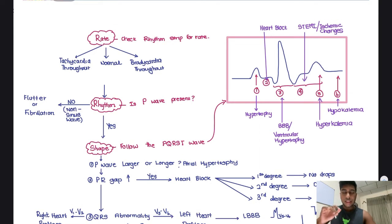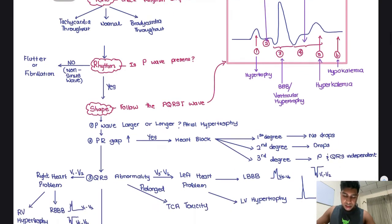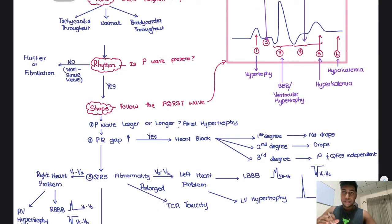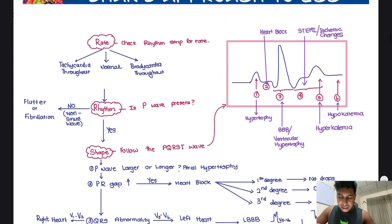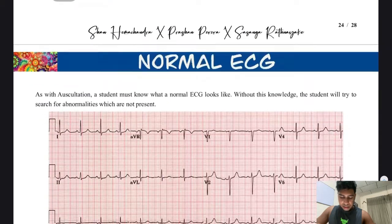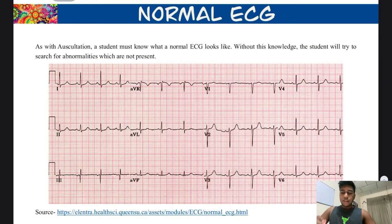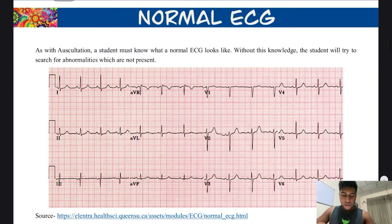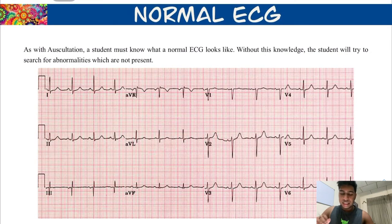Next, we have the rhythm. The one thing you need to check is whether it's a sinus rhythm or not — meaning, is the P wave present? And finally, the shape: I follow the PQRST wave to see if there's any abnormality. We will come back to this image. This is going to be a summary; the actual class was done some time ago.